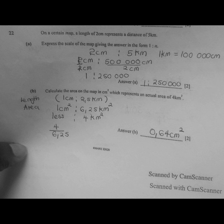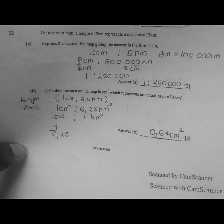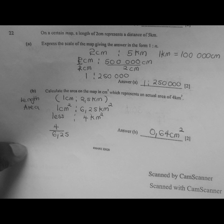On part b, calculate the area on the map in square centimeters representing an actual area of 4 square kilometers. The scale of length is 1 centimeter representing 2.5 kilometers. We square the scale of length so that 1 square centimeter represents 6.25 square kilometers. Applying proportion: since 4 is less than 6.25, we calculate 4 over 6.25 times 1 square centimeter to get 0.64 square centimeters.